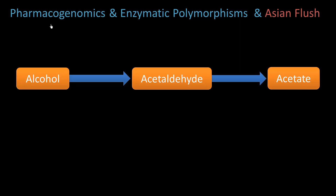Alright friends, welcome back. What we want to do now is understand pharmacogenomics and something called enzymatic polymorphisms. We're going to use Asian flush, or the alcohol-induced flush, as our example to illustrate how differences in people's genes can cause adverse drug reactions.